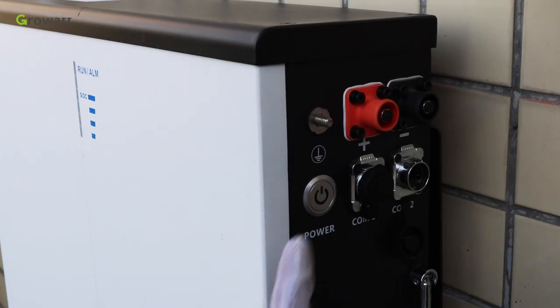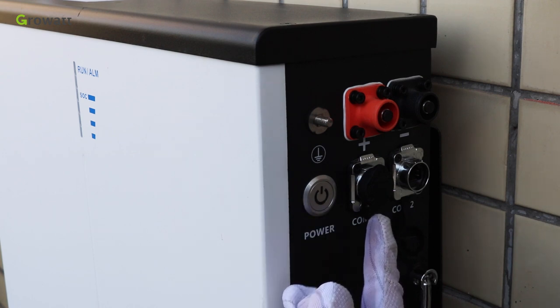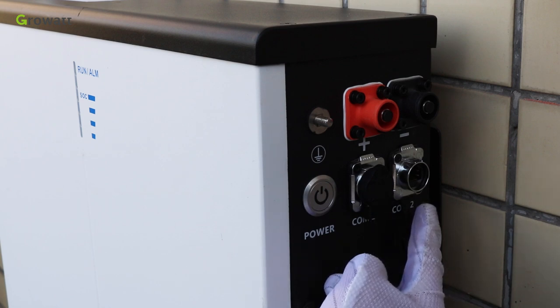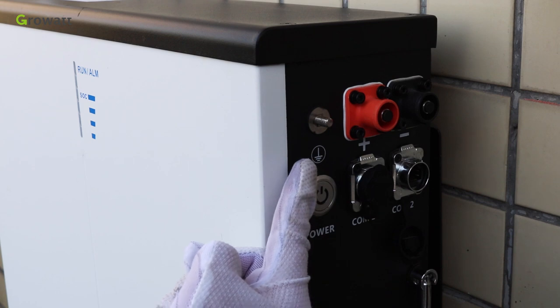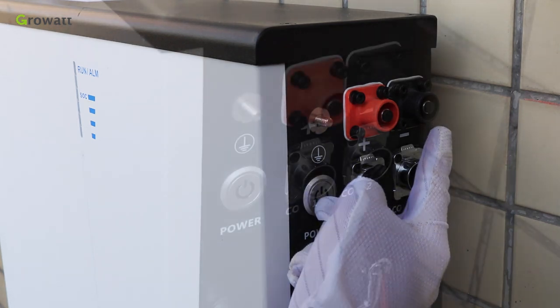There is the button to power on and off the battery. Comm.1 communication terminal from battery to the inverter. Comm.2 is the communication terminal between two batteries. The ground terminal, the battery positive power terminal and the battery negative power terminal.